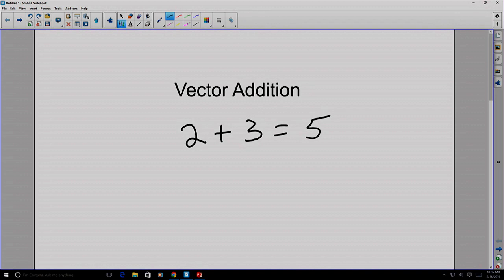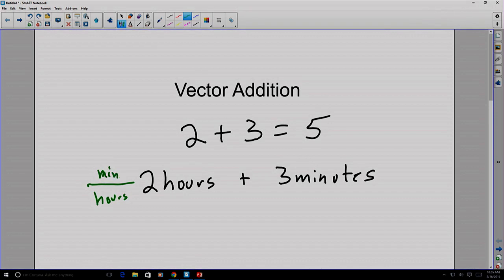And we also know how to add scalar values. 2 hours plus 3 minutes are two scalar values that we have to do a little bit of conversion in order to add them first. For example, we can convert our hours into minutes, noting that there are 60 minutes in one hour. Canceling, and we get 120 minutes plus 3 minutes, which is 123 minutes.